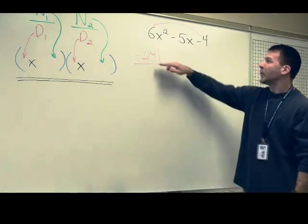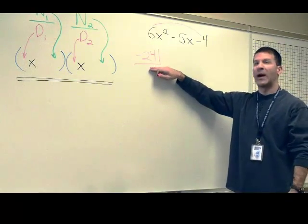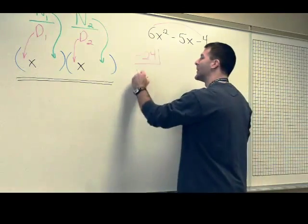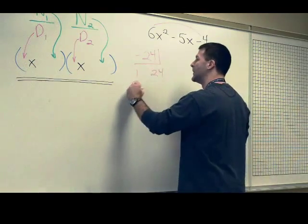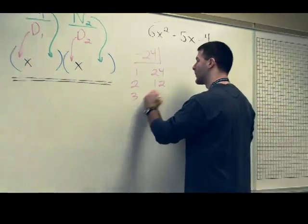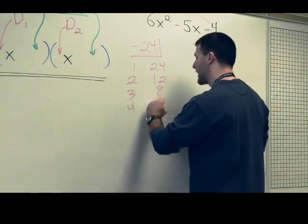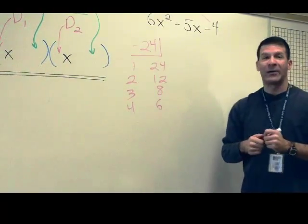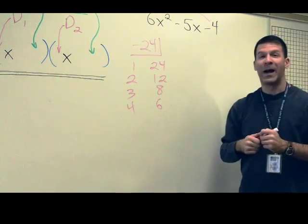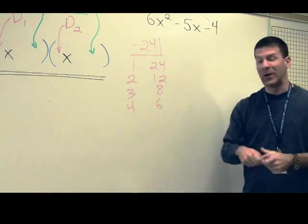Box that off. Now, go through your factor pairs of what multiplies to a negative 24. That'd be a 1 and a 24, 2 times 12, 3 times 8, 4 times 6. So again, you're thinking what's called factor pairing. Now, some of this you can do in your mind, but I need to show in terms of this process.